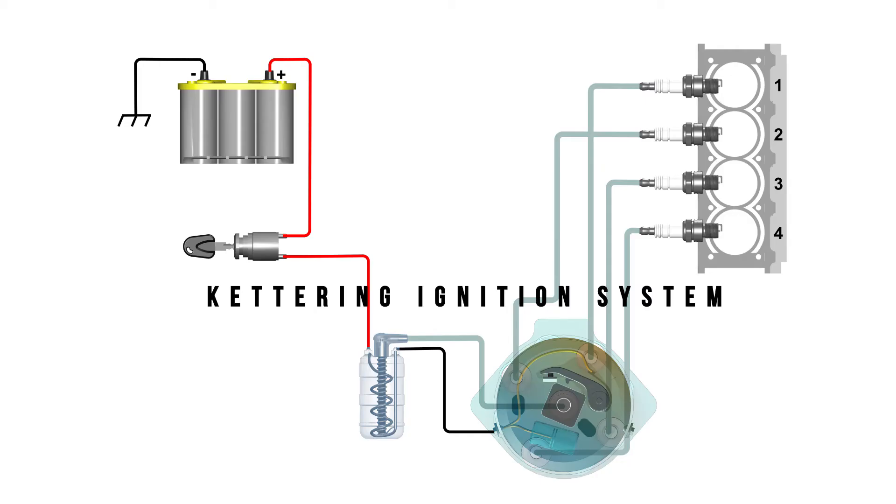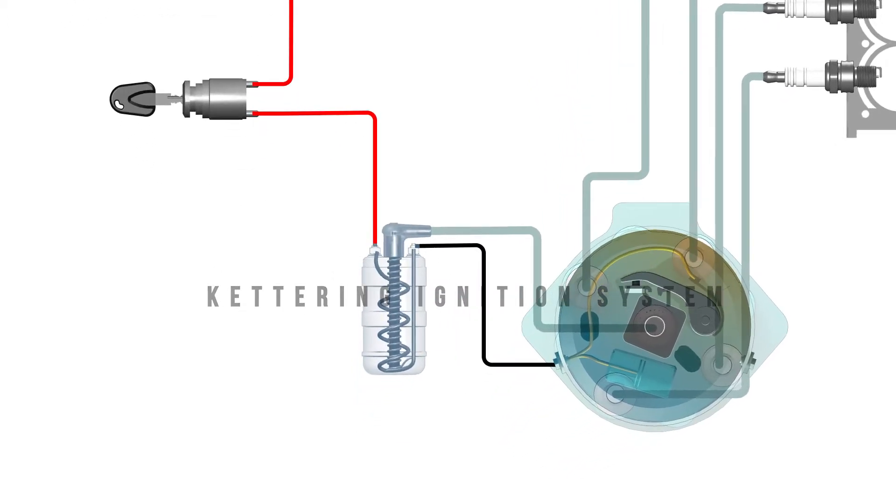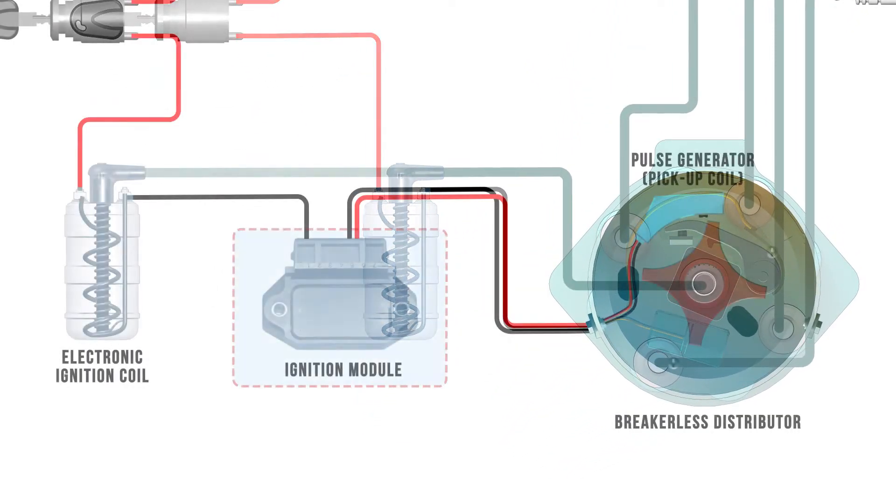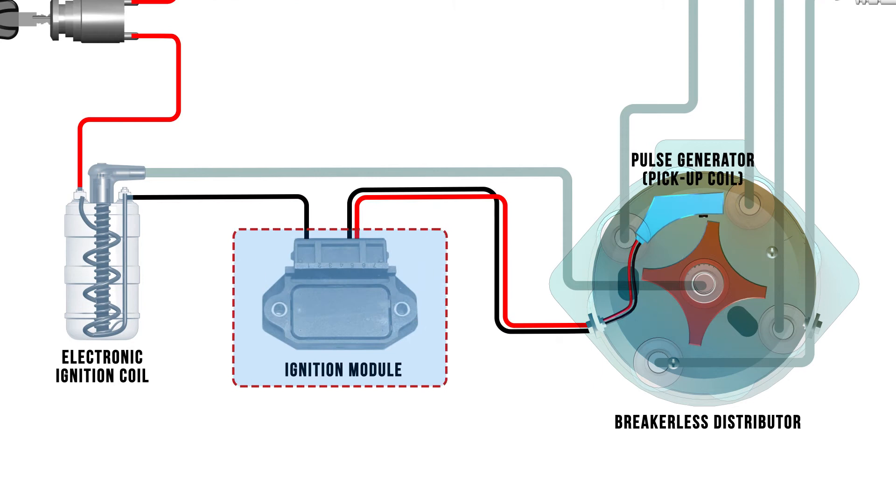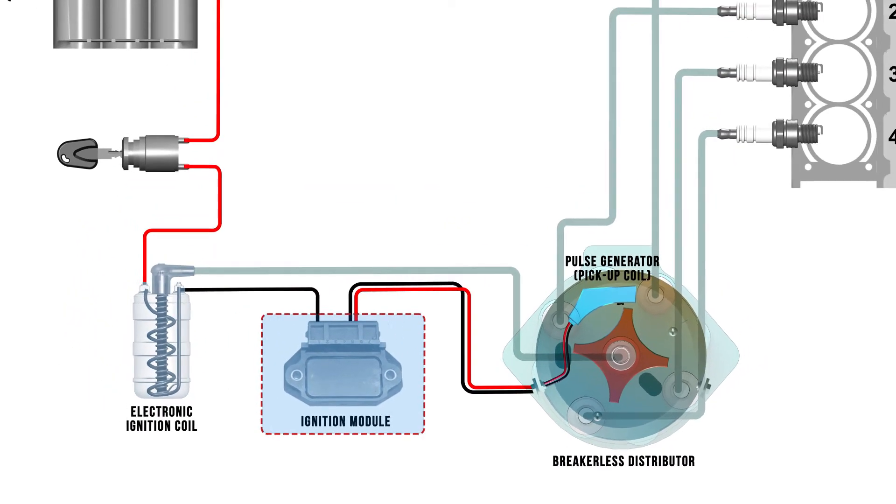The layout of an electronic ignition system looks very similar to a Kettering system, but an igniter or ignition module is connected between the coil and distributor.